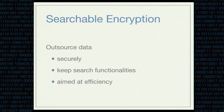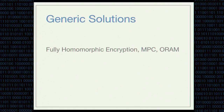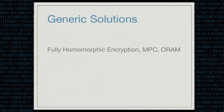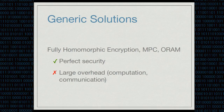It's really aimed at efficiency, so the whole searchable encryption literature tries to combine these three properties. You have generic solutions like fully homomorphic encryption, multi-party computation, and oblivious RAM. They achieve perfect security or almost perfect security, but they have really large overhead — either in terms of computation for FHE, or in terms of communication for oblivious RAM.